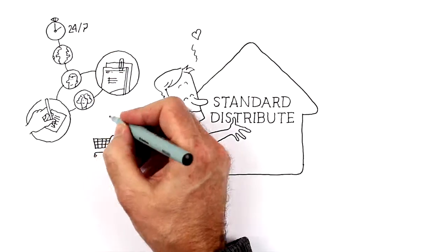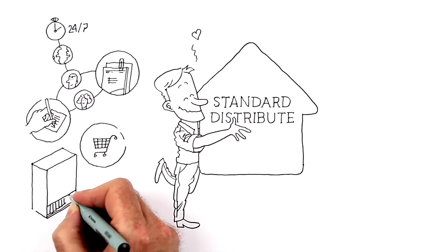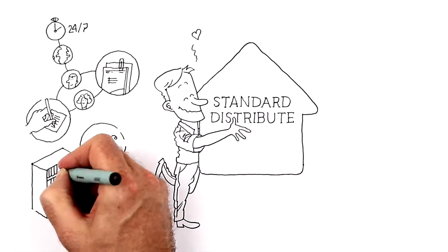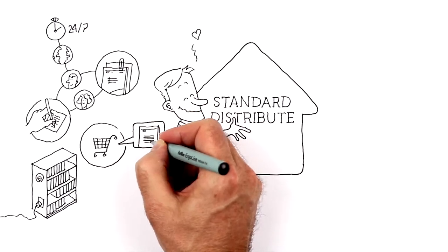If you need a particular standard, you can buy it immediately in Standard Distribute, and it will be instantly accessible. And, of course, you're given previews of the first seven pages before you decide to buy.